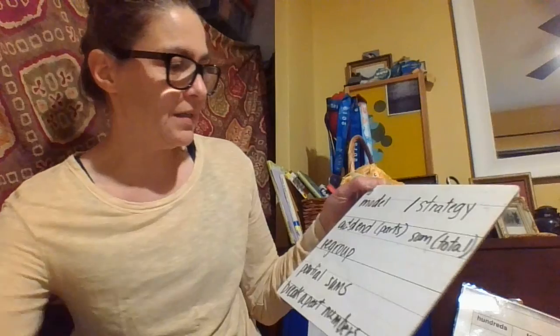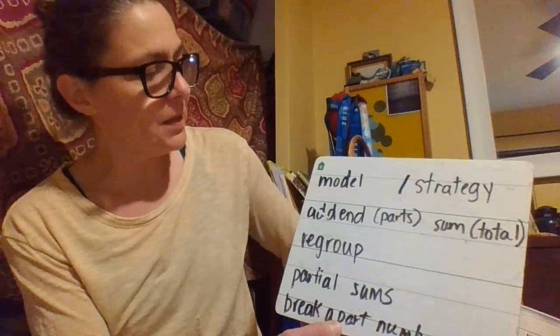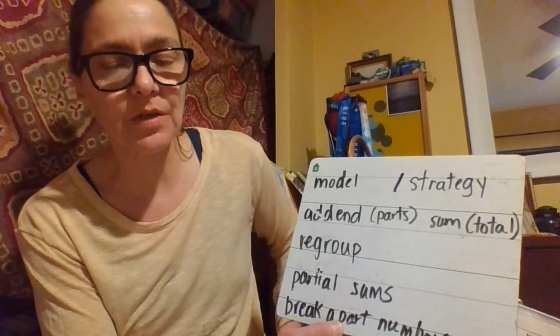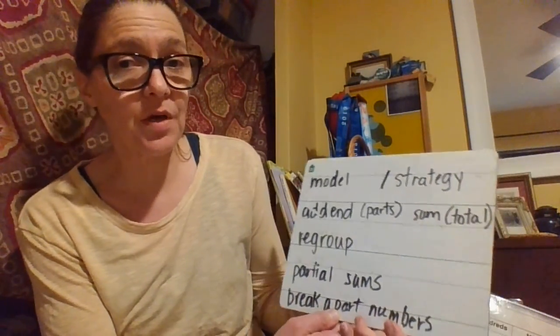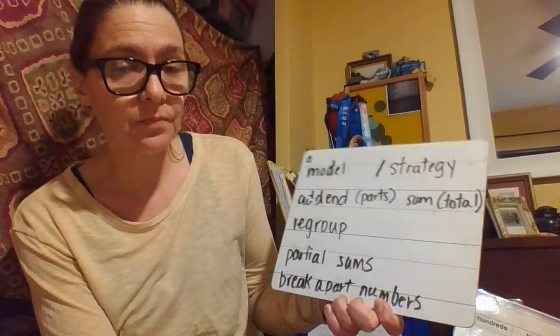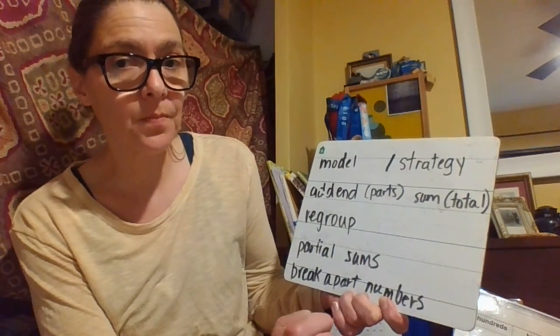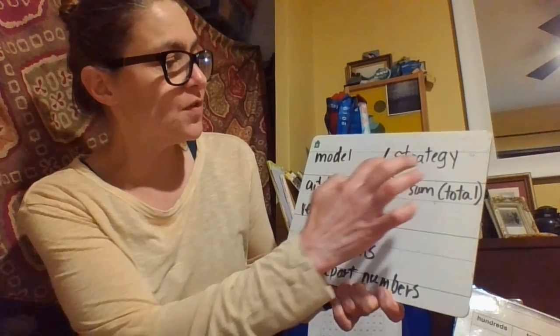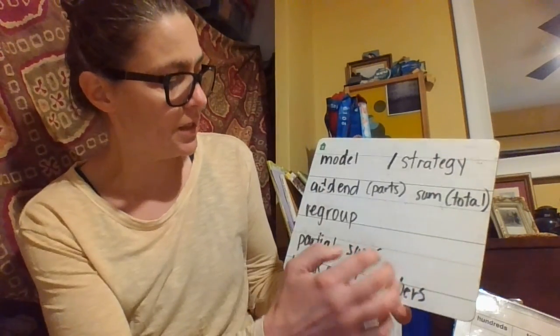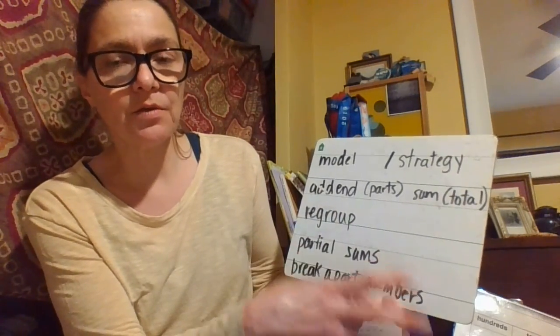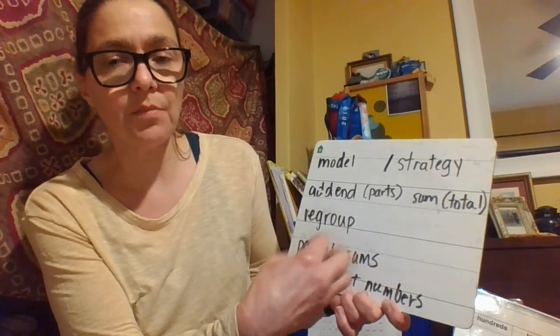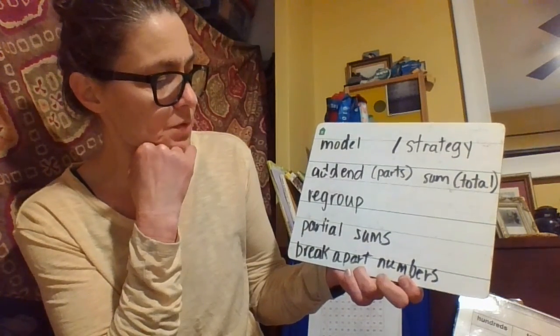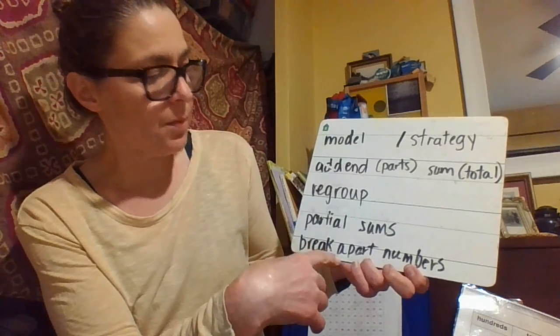Here is some vocabulary. We have model, which is the number lines like we did yesterday and drawing visuals of your base 10 blocks. Those are models of the equation or the problem. A model versus a strategy - a strategy is a system that works for you every single time to solve your problems. Strategies could be partial sums or break apart numbers.